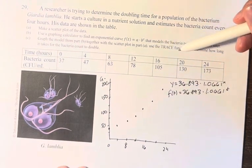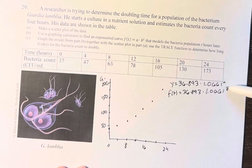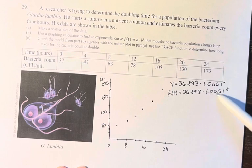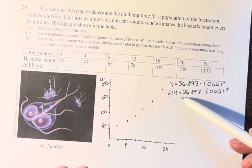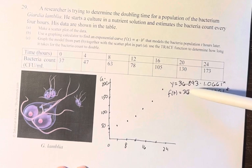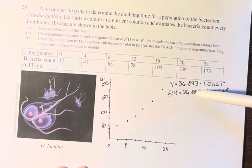We're also asked to use the trace function. I don't have a trace function on that particular calculator, so I'm going to do what I think is the more helpful way. So when t = 0, this equals 36.893 * 1.0661^0. Anything to the 0 is just 1, so this is just 36.893. So when t is 0, f(t) is 36.893.